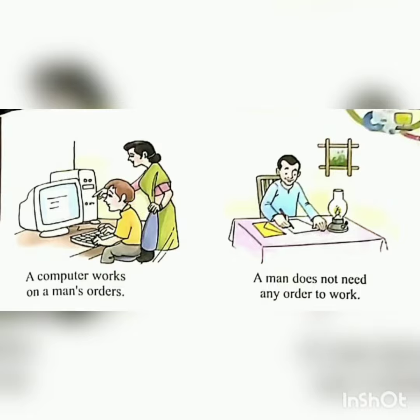The last difference is that a computer works on man's orders — it works only if somebody gives it an order or instructions. Human beings, on the other hand, do not need any order.